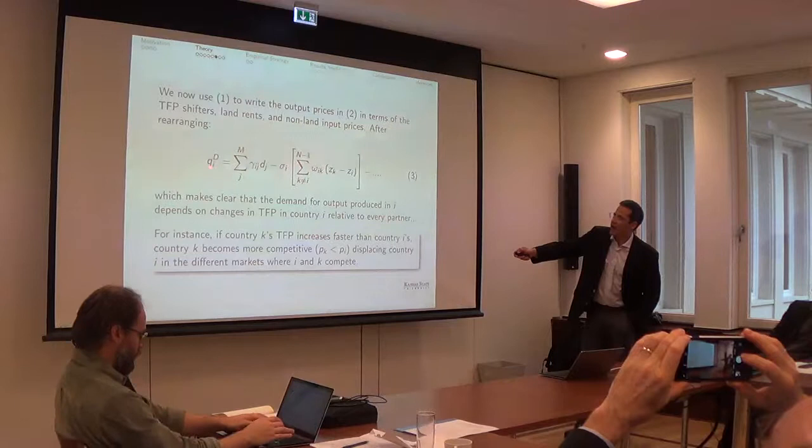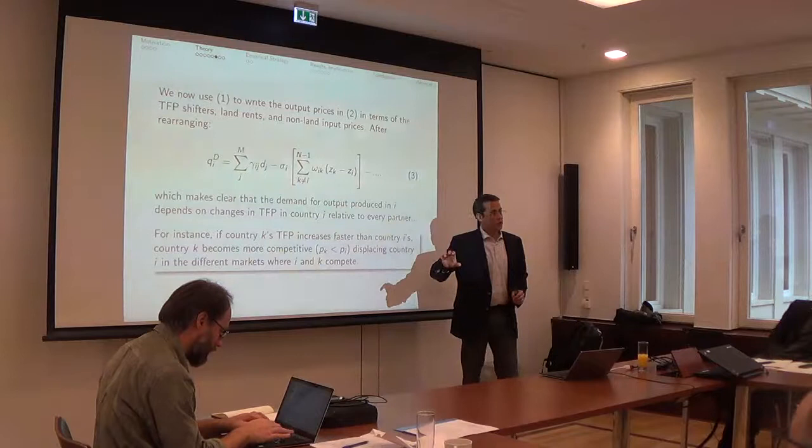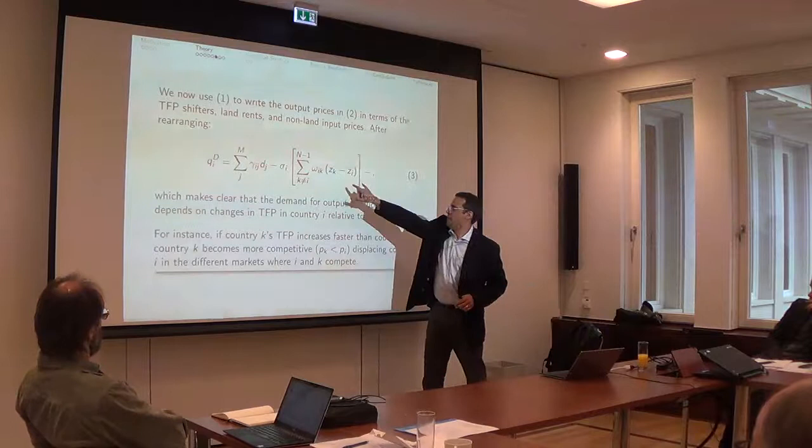This is what I do here. I am omitting the other terms, but what I have now is the demand in country i, the expansion effect, and now it's in terms of relative TFP gain. So I am getting a bit closer to what I want and it's to relate the changes in TFP abroad to the land use decisions in country i.